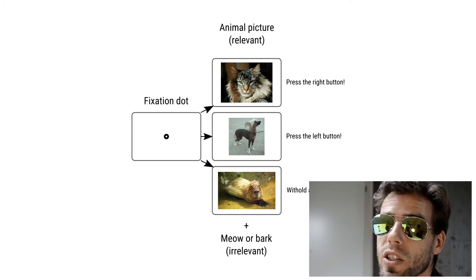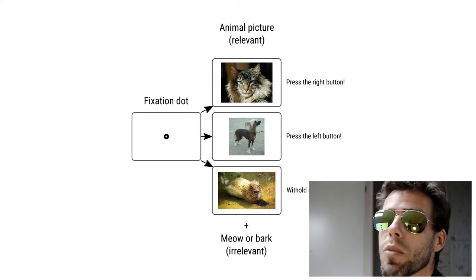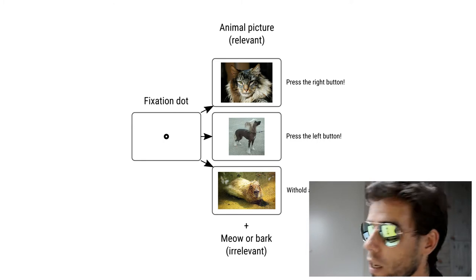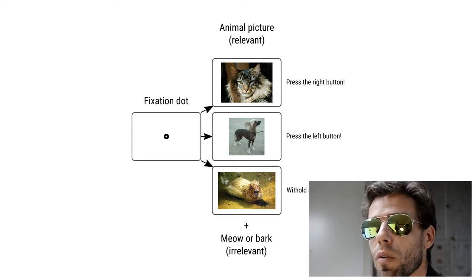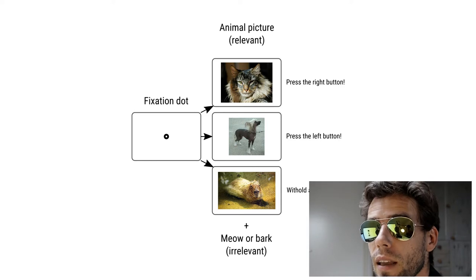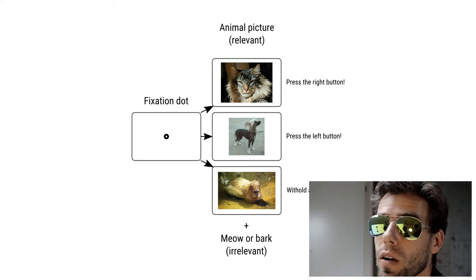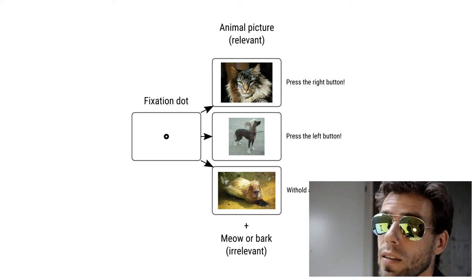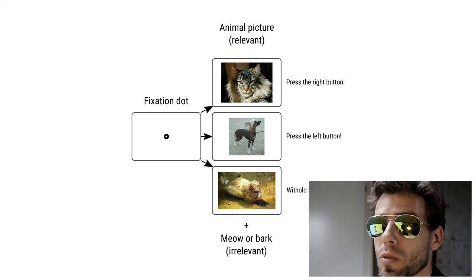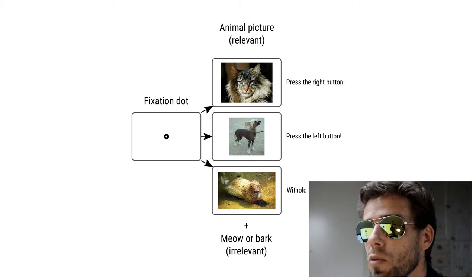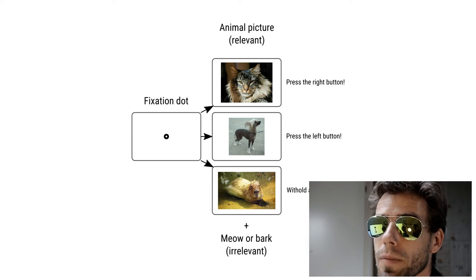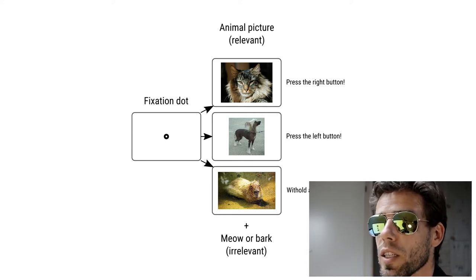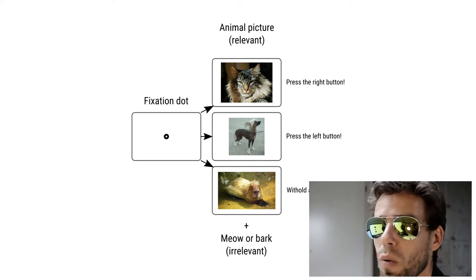At the same time, we present a sound — either a meow or a bark — but the sound is completely task-irrelevant and unpredictive of the image, so the participant should ignore it. Nevertheless, we expect a congruency effect, such that participants are faster and more accurate if they see a cat and hear a meow, or a dog and hear a bark — congruent trials — compared to seeing a cat and hearing a bark, or a dog and hearing a meow — incongruent trials. We also expect participants to make false alarms in the direction of the sound when they see a capybara. I haven't actually collected data with this experiment, but the congruency effect is so strong I'm pretty sure it would work in real life.